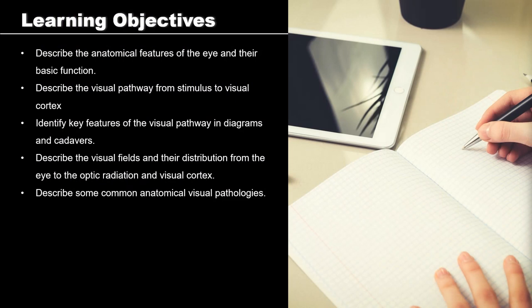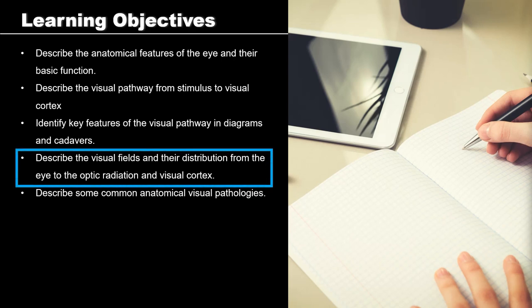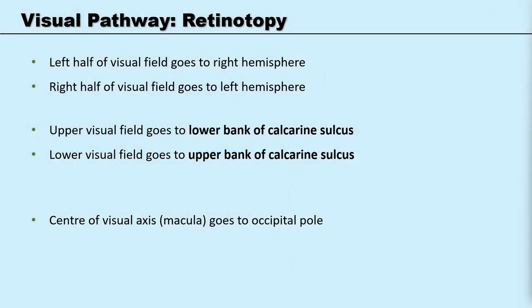Now we have had a look at the visual pathway — how does an image within our visual field project onto the visual cortex? Much like when we looked at somatotopy and the motor homunculus, the visual pathway also has one of these maps, called a retinotopy. To summarise what is on the retinotopy map, we have to appreciate that the image is going to be flipped upside down and mirrored.